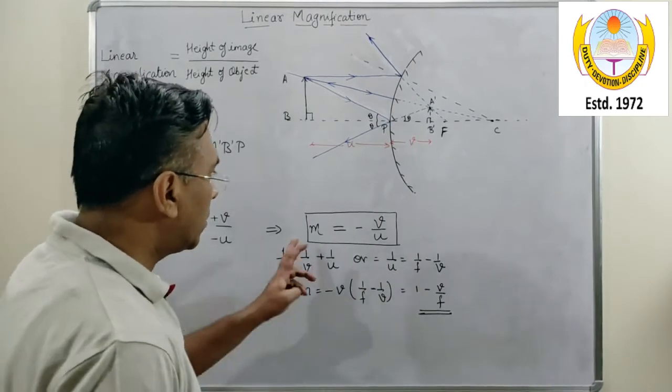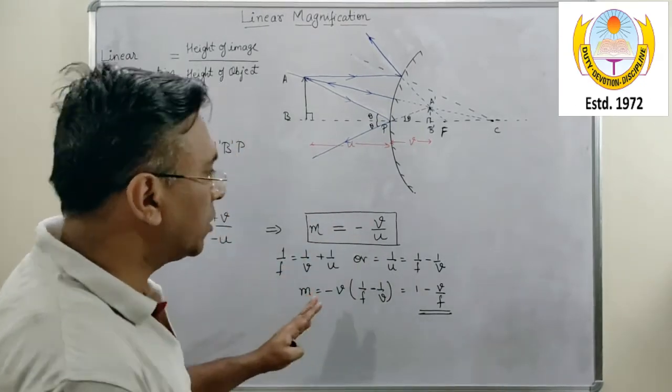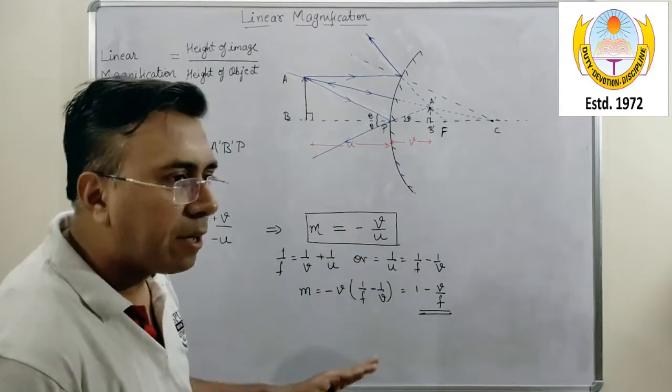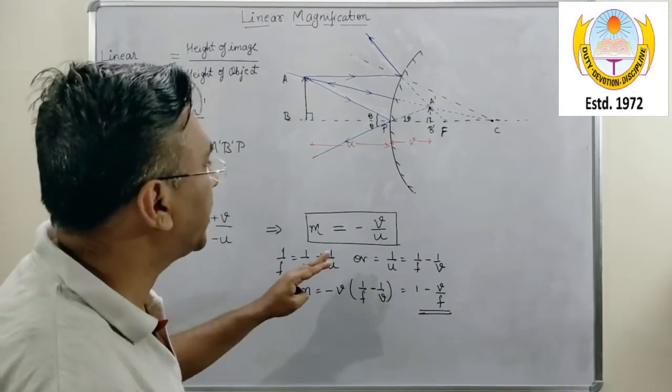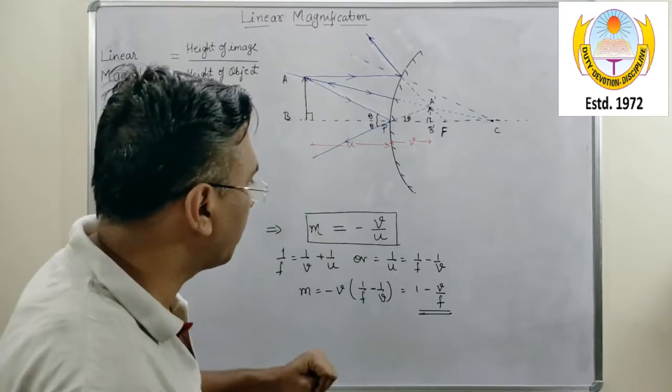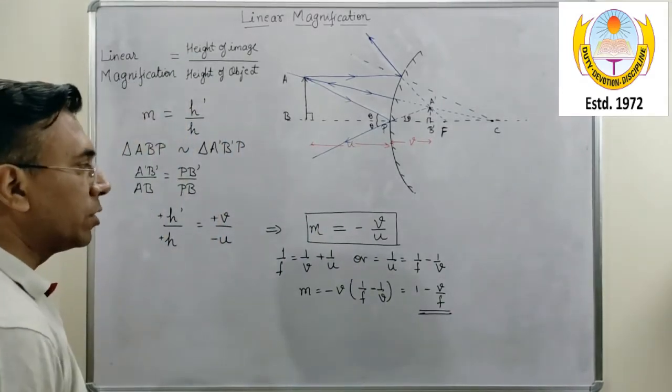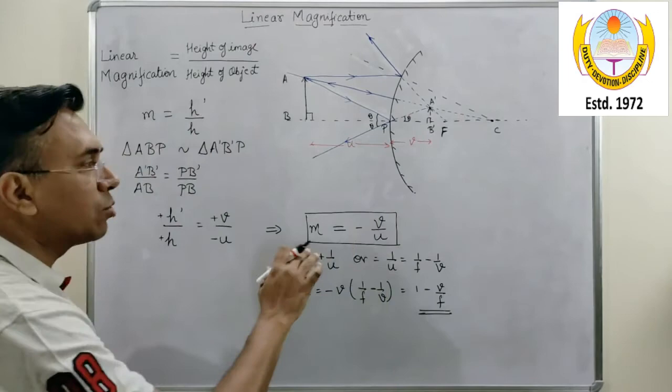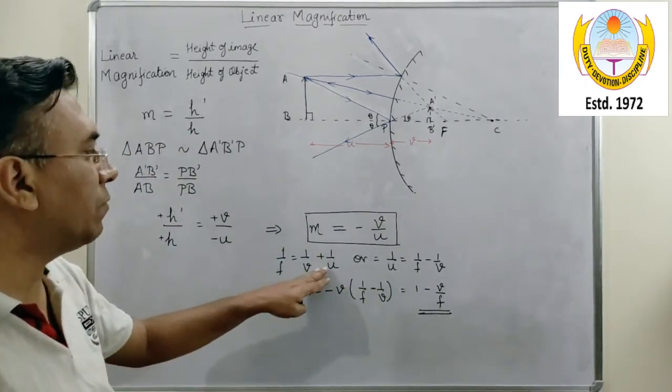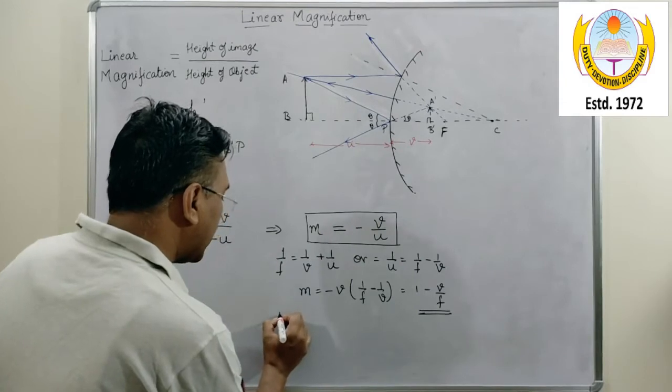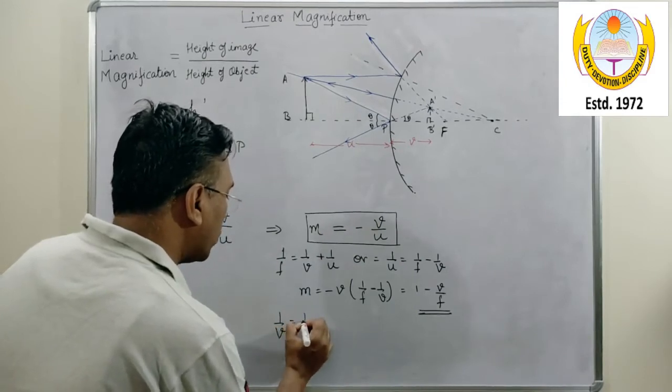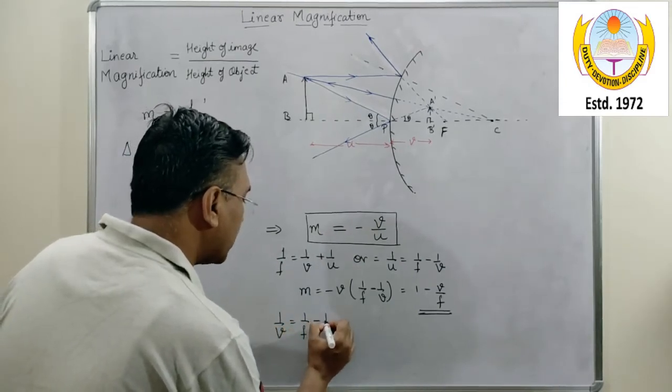We can also write the magnification formula in terms of U and F, the way we have written it in terms of V and F. Similarly, we can write it in terms of U and F. Now, for that what we have to do is we need to know the value of V in terms of F and U. So for that simply we can use the mirror formula. From the mirror formula I can write 1 upon V equals to 1 upon F minus 1 upon U.